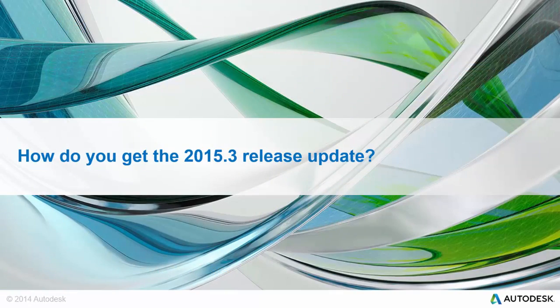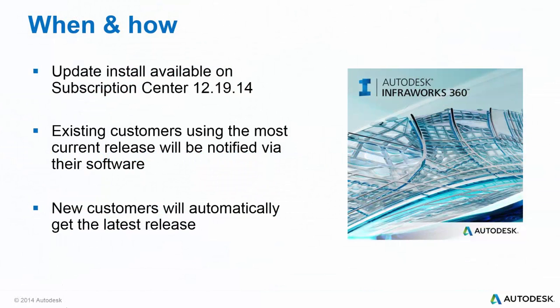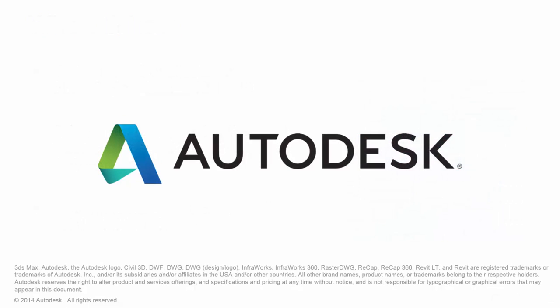When and how can you get this release? Existing InfoWorks 360 customers using the most current release will be notified via their software and provided a link to download the latest release. New customers will automatically get the latest release when they purchase a license. All other users can download the latest release from the InfoWorks 360 Subscription Center on December 19th. Thanks for watching.